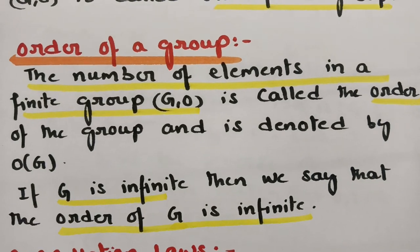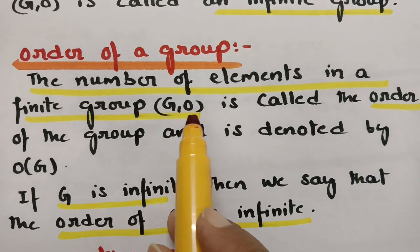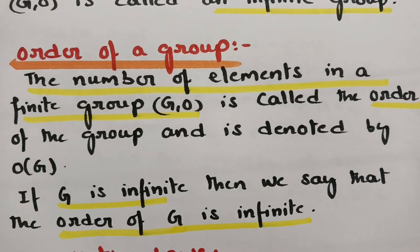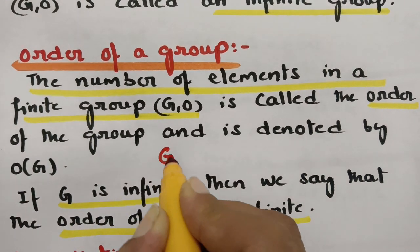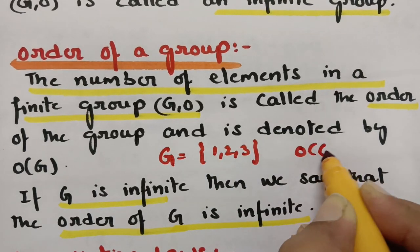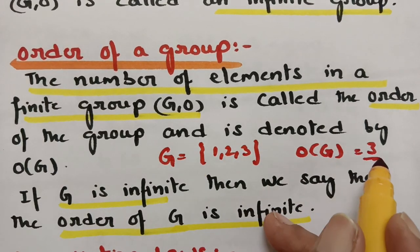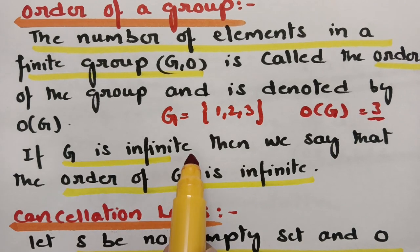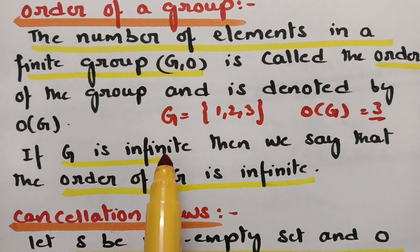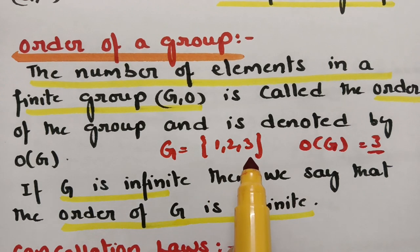What is the order of a group? The number of elements in a finite group is called the order of the group, denoted as order of G. For example, if a set G contains three elements, then the order of G is three. If G is infinite, then the order of the group is infinite.